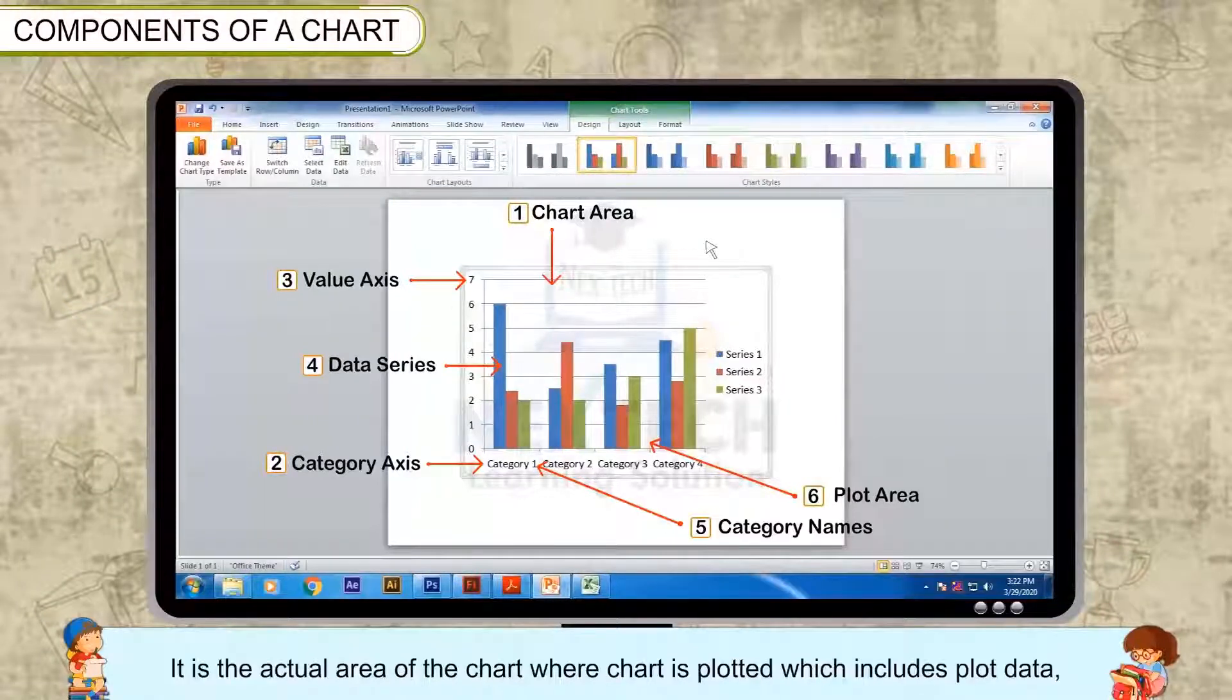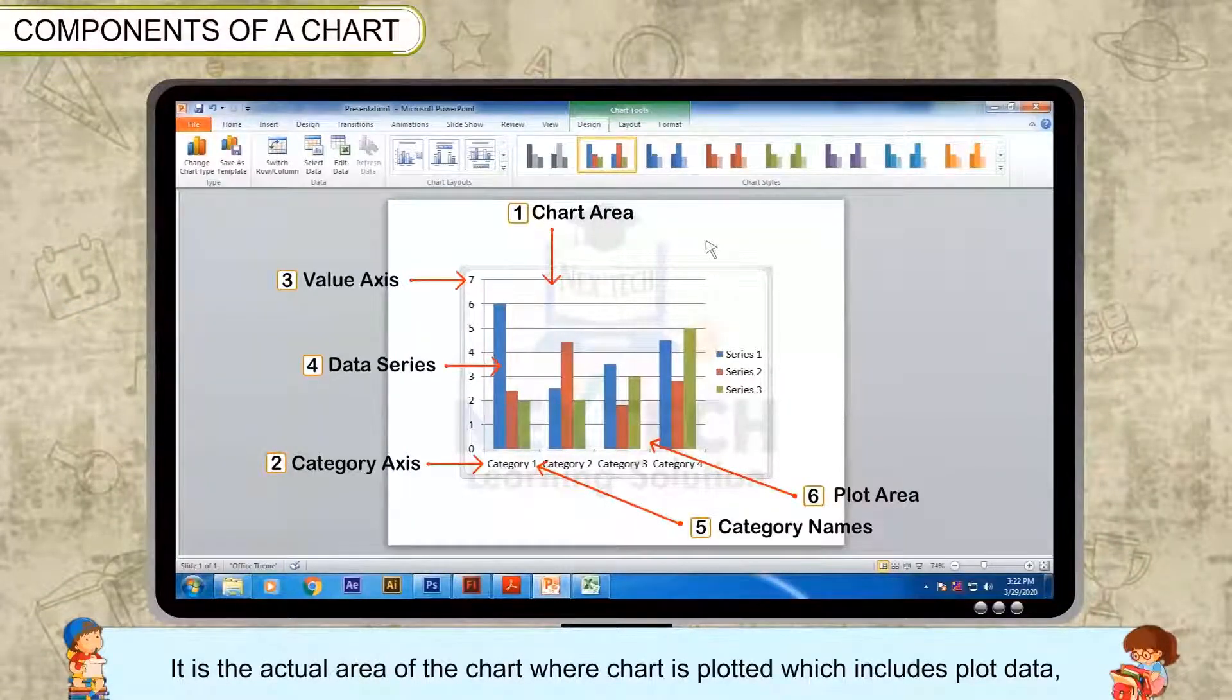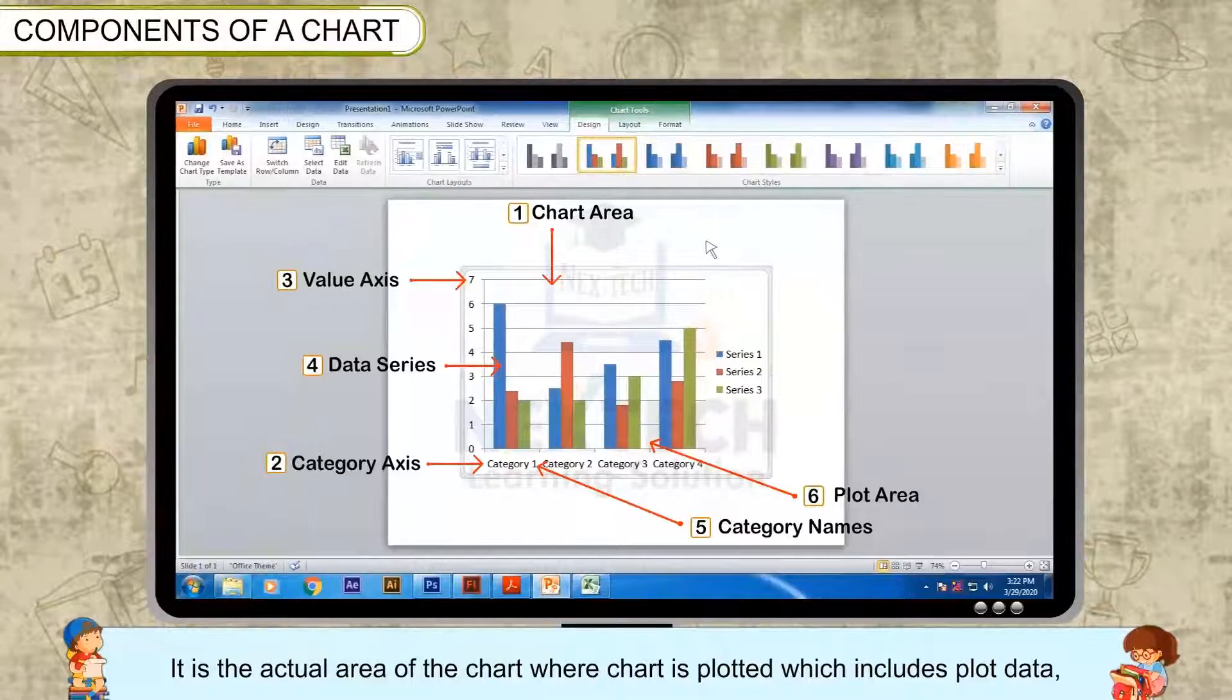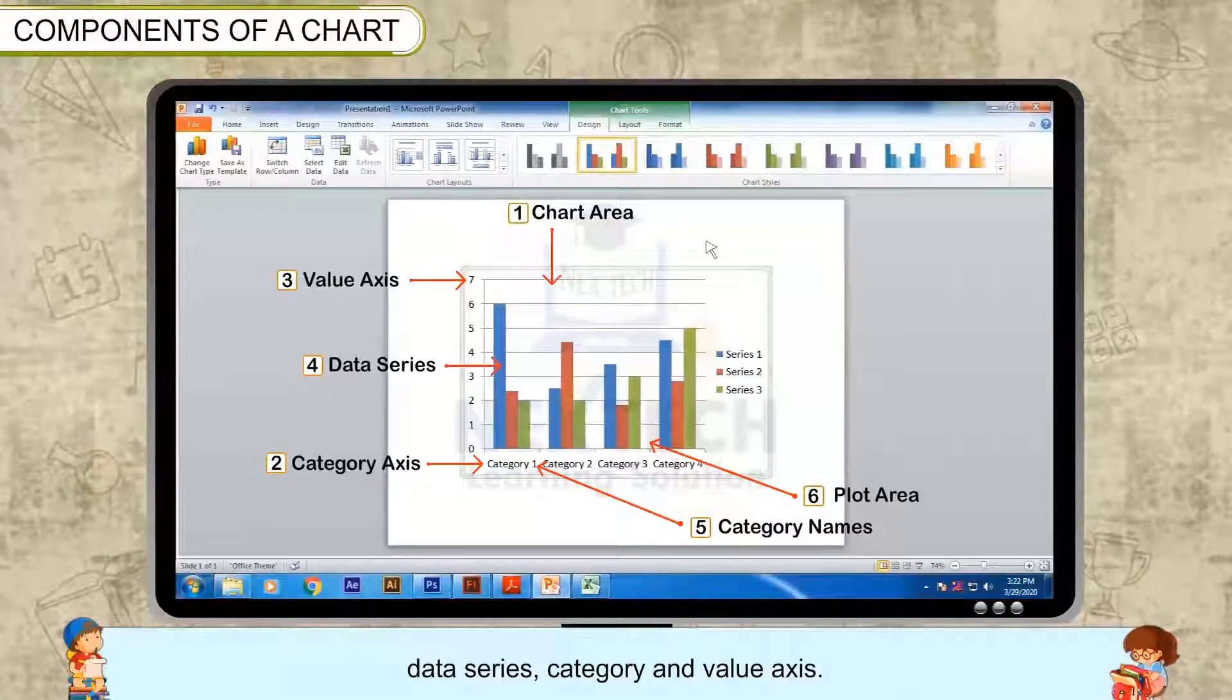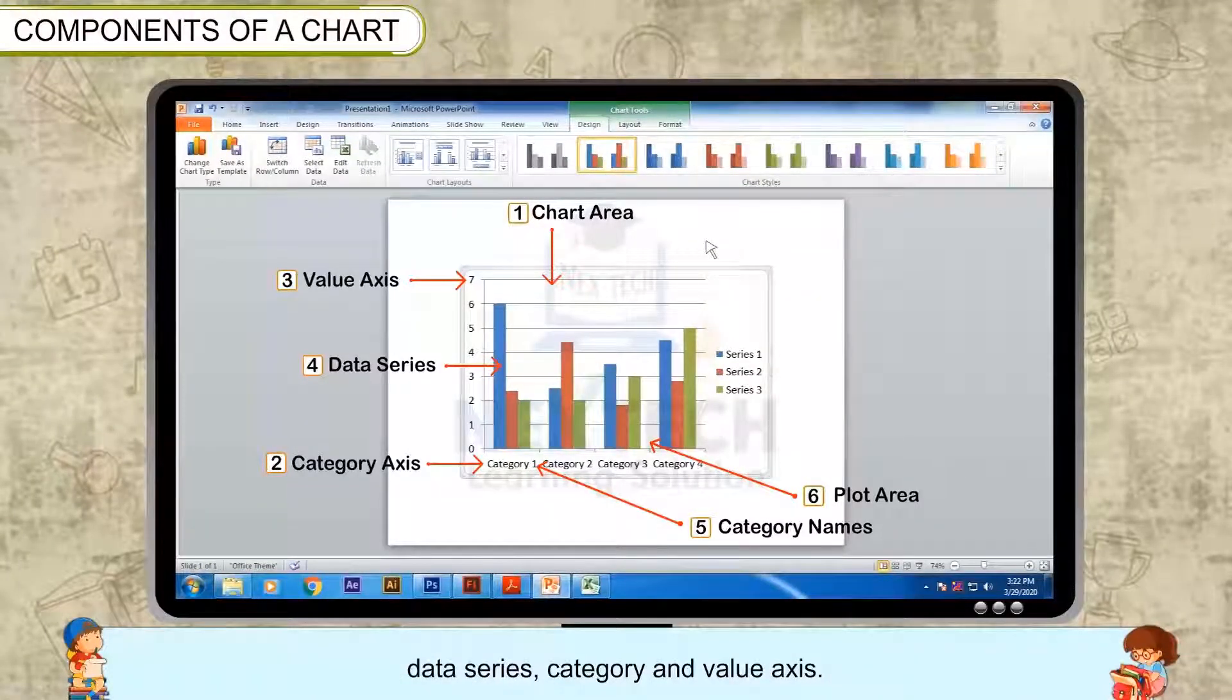Plot area: It is the actual area of the chart where chart is plotted, which includes plot data, data series, category and value axis.